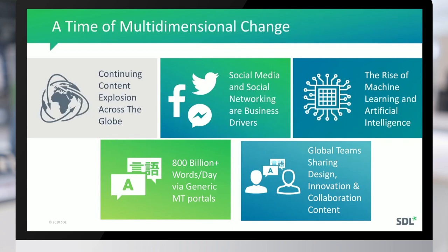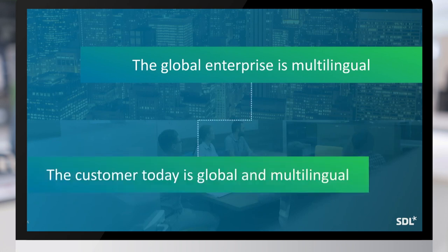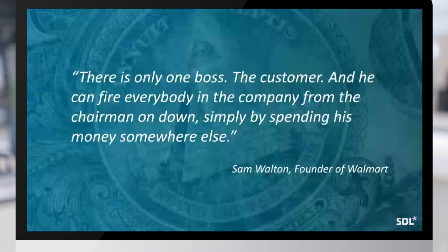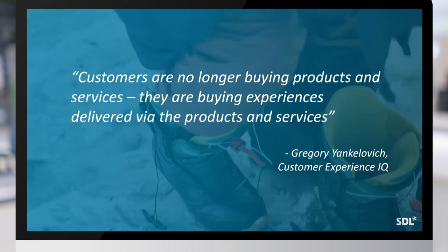We live in a time of great change — a time of what many people call digital disruption — because of the sheer explosion of information and the ability of customers to understand what they're doing and how you compare against your competitors. It has become very easy for customers to take control of the whole business relationship with you. The global enterprise is increasingly multilingual and the customer today is also very likely to be global. There's a famous quote from the founder of Walmart: there's only one boss, and he can fire everybody in the company from the chairman on down, by spending his money elsewhere.